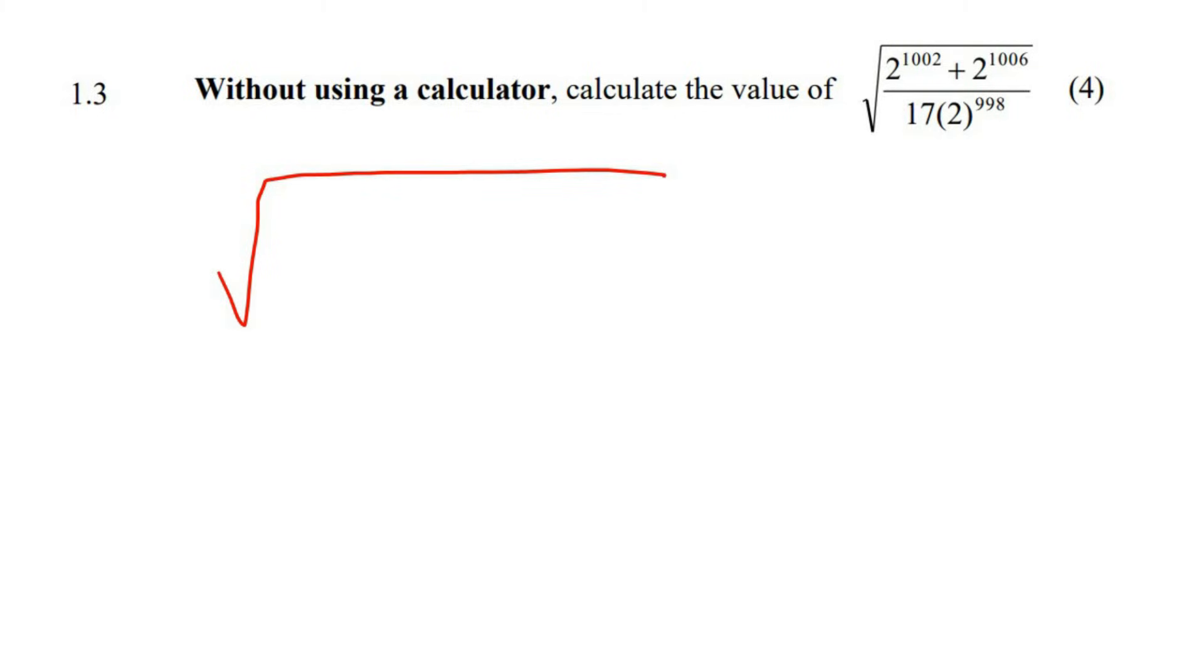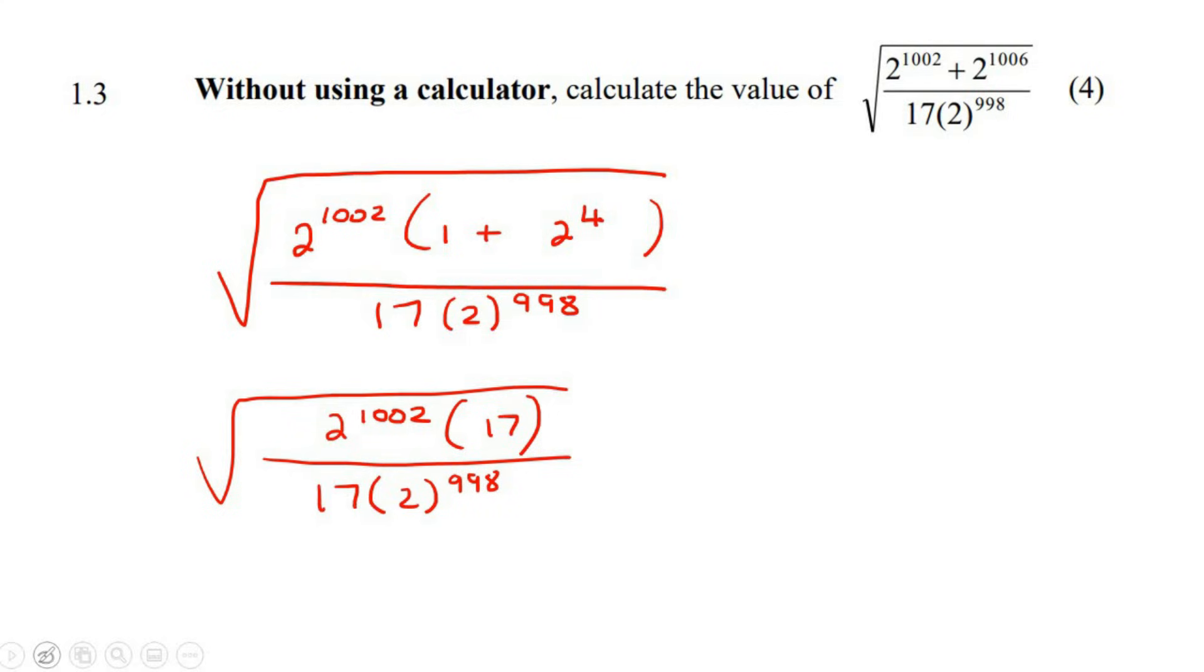So we're going to open up a square root, and we're going to take out a 2 to the 1002 as a common factor at the top part. I don't care what's happening at the bottom right now. And so you're going to be left with 1 plus 2 to the power of 4. Right, now at the bottom, you're going to be left with 17, and I have no idea what we're going to do at the bottom. Don't worry, it's all going to work out. Check this out. If you know that 2 to the 4 is 16, and 16 plus 1 is 17. Ooh, and there's a 17 at the bottom. So what happens is we can just do this. We can then say that that becomes a 17. At the bottom, we also have a 17. So these 17s can cancel, and so you're left with a square root of 2 to the 1002 at the top, and 2 to the 998 at the bottom.